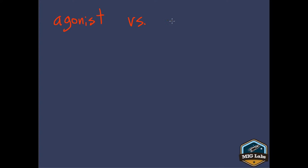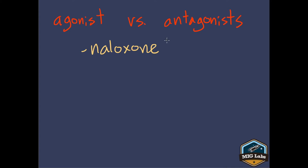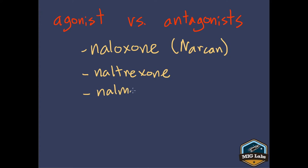Then there are the antagonists, which are things that cancel out those effects. The three big antagonists for opioids are naloxone — also known as Narcan — naltrexone, and nalmefene. By far the most common is naloxone. I have yet to see an EMS agency that has naltrexone or nalmefene in their protocols, so naloxone is kind of the standard when it comes to opioid antagonists.